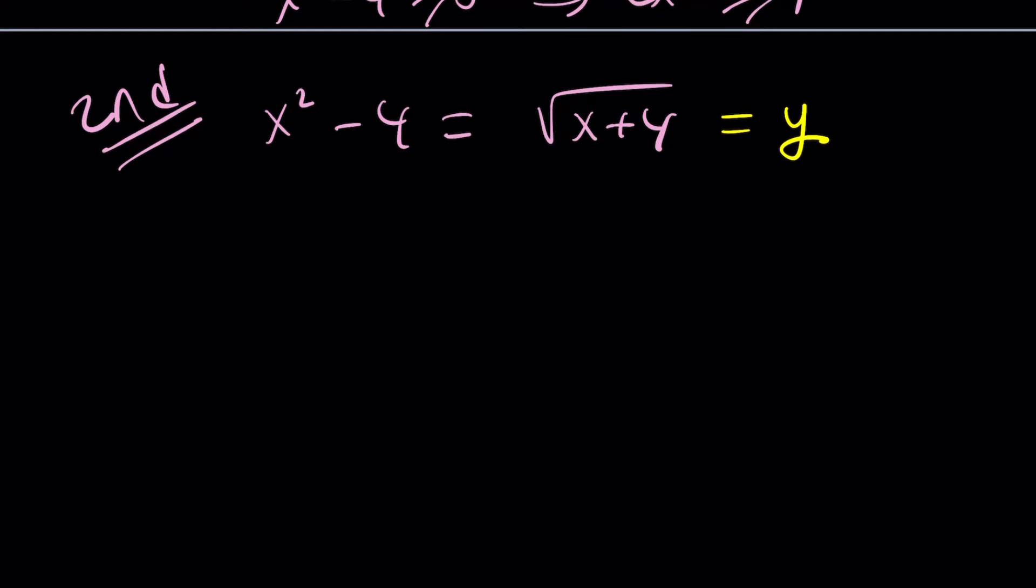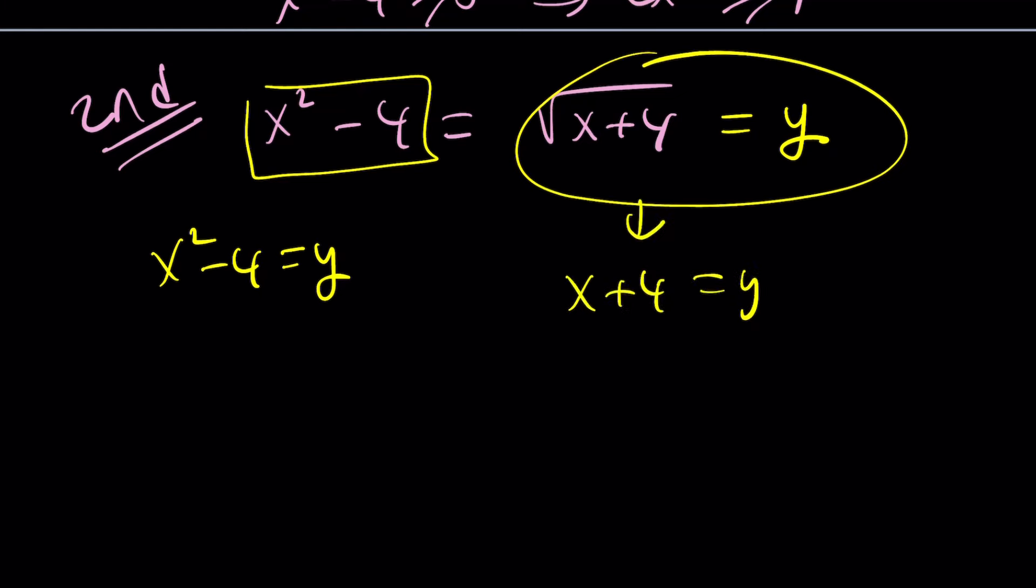Now, we're going to go ahead and do this. Set this equal to y. Use a second variable. You can also use z if you like it better. But in this case, y would work. And from here, we get the following. I mean, this gives us x squared minus 4 equals y, for sure. But let's go ahead and focus on this. Square both sides. x plus 4 equals y squared. And then subtract 4. And you'll get y squared minus 4 equals x. Bring it over here. And then you've got a system. A good one.